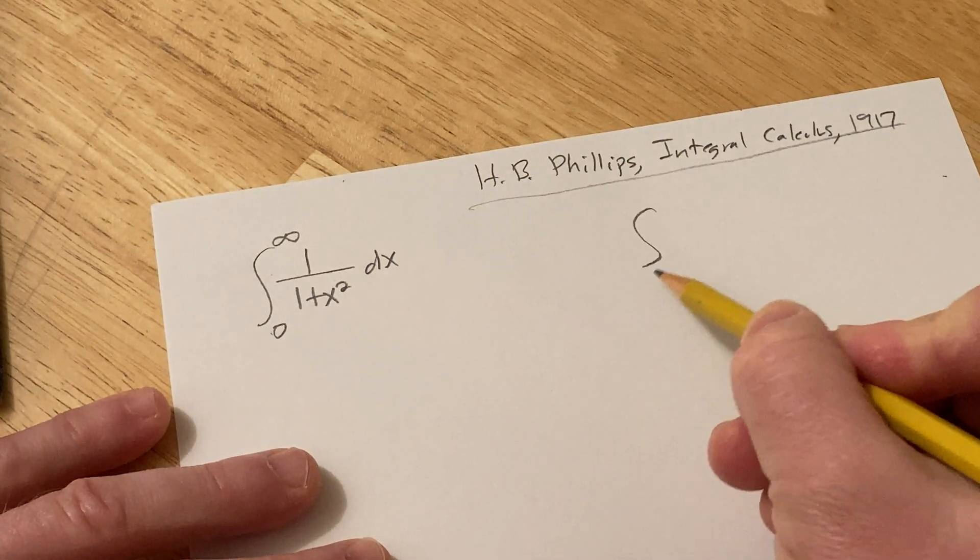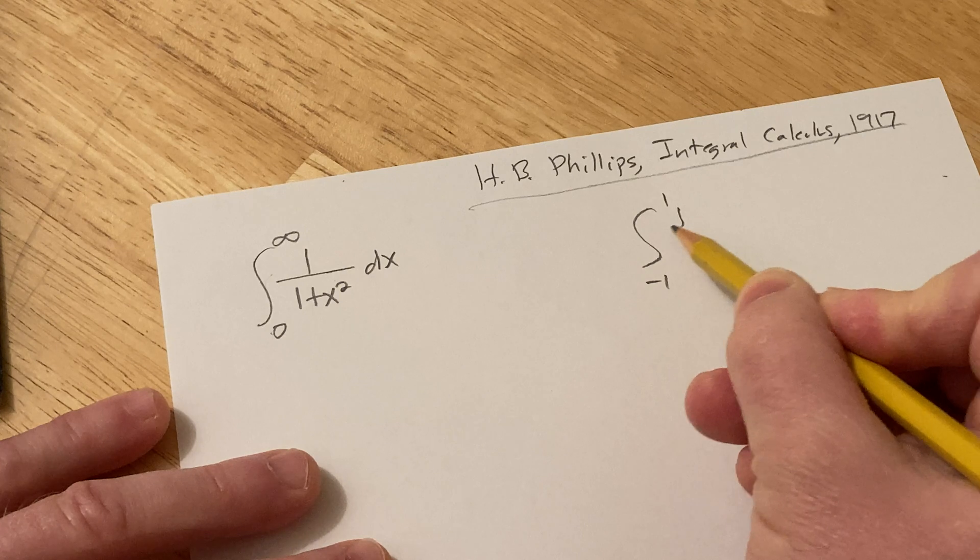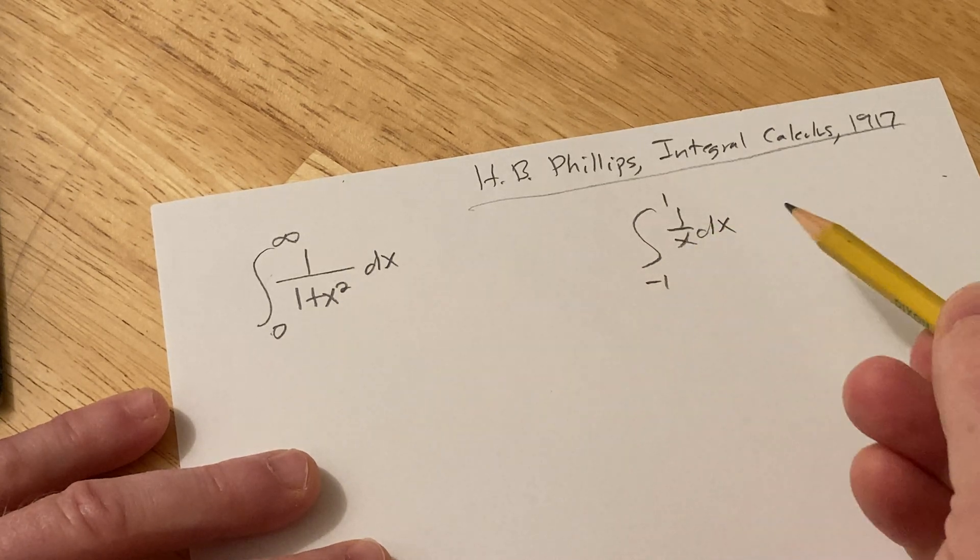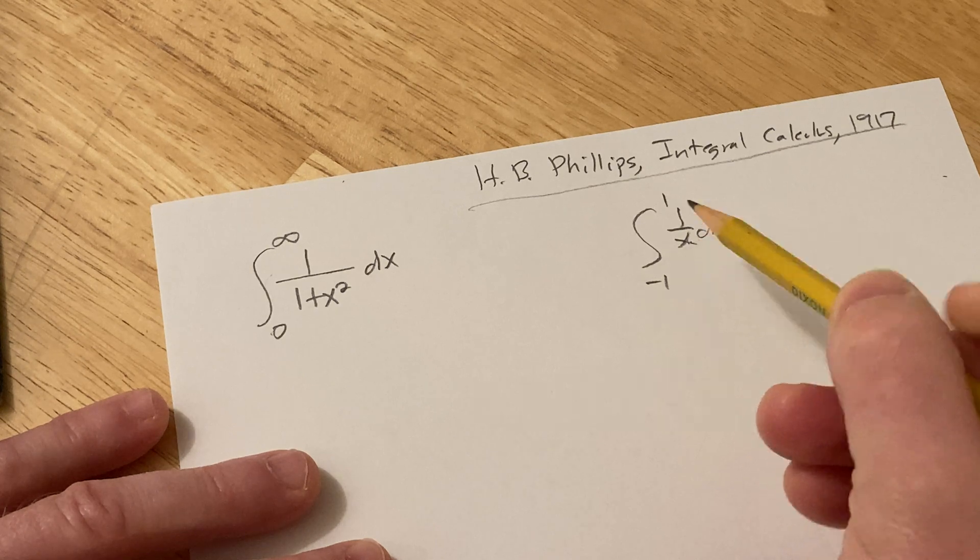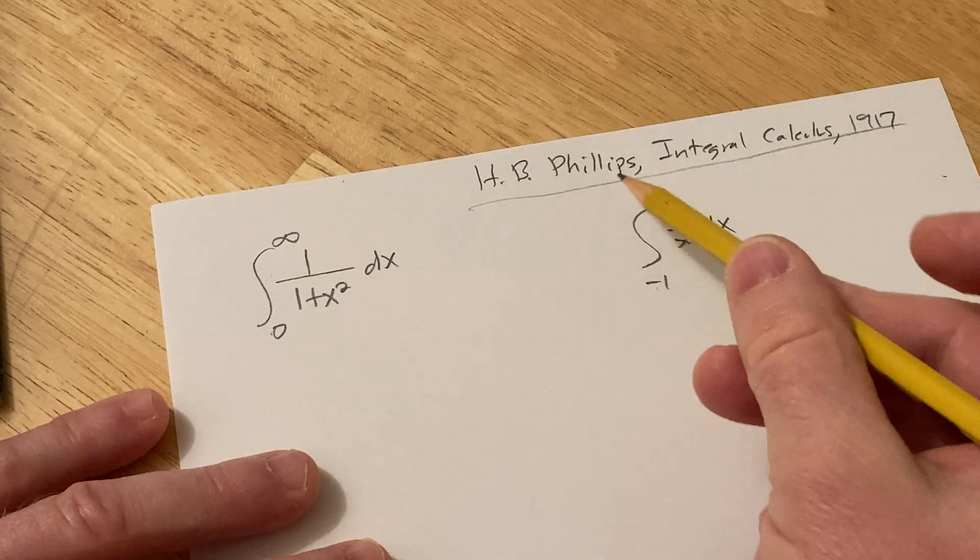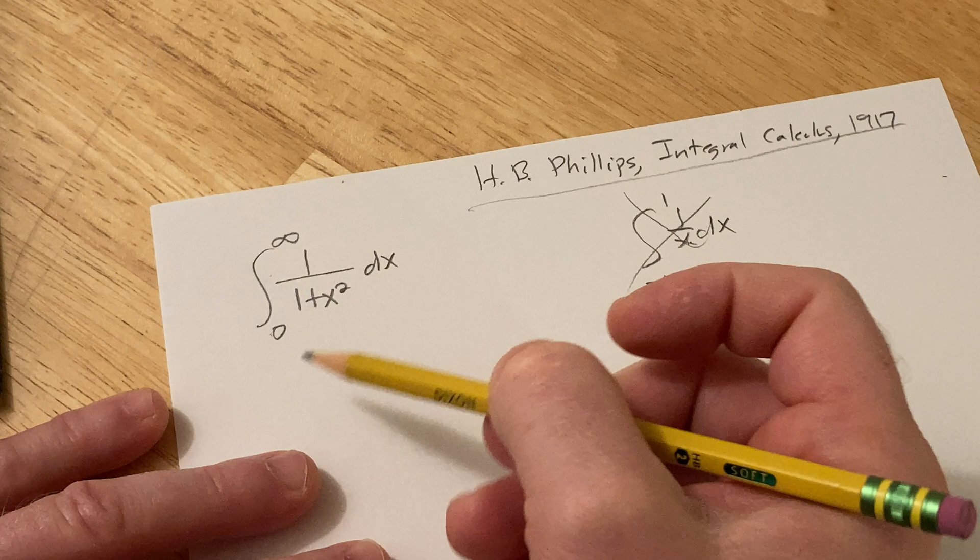So for example, if you were integrating from negative 1 to 1, 1 over x dx, this would also be considered improper because it has a discontinuity at 0, and 0 is between these numbers. And in case that's not what we're dealing with here,